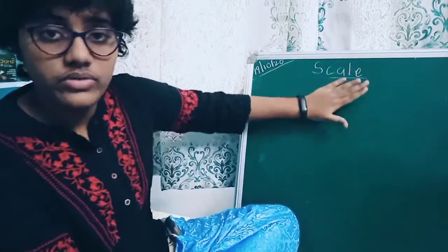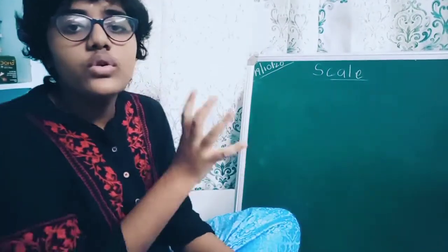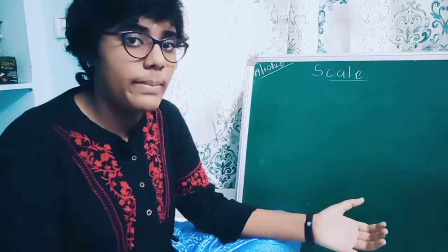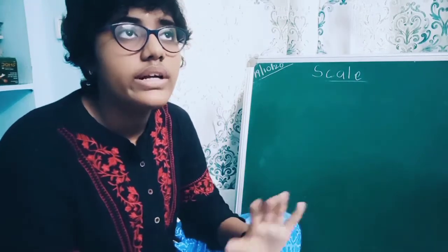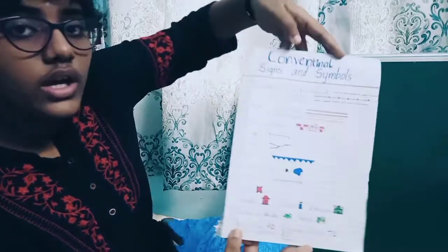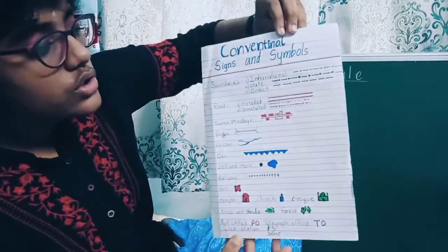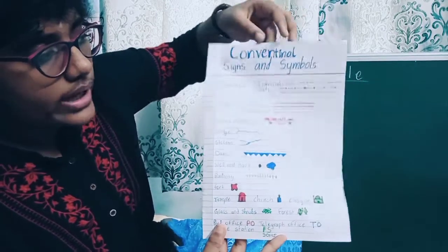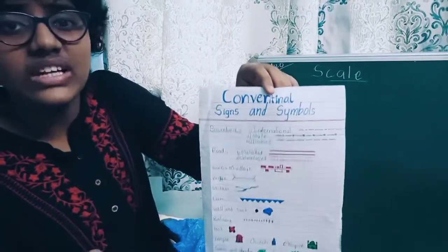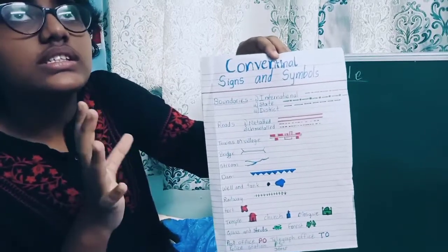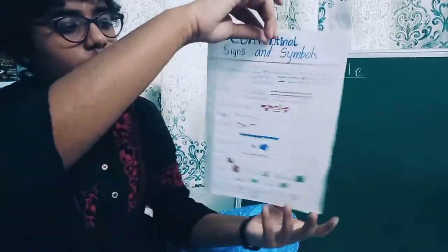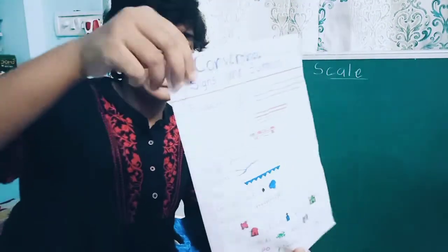With this we have completed the topic of scale. Today I also want to show some conventional signs and symbols. On a map we cannot draw or write everything — we cannot label every forest, bridge, and boundary. So we use conventional signs and symbols as short forms for all these features.